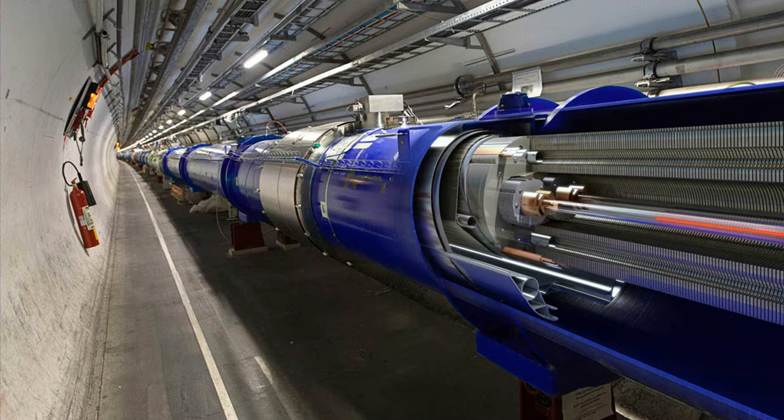How was the Higgs boson discovered? Scientists found it using a giant machine called the Large Hadron Collider. It is a 27 km long underground ring near Geneva, where particles are made to smash into each other at near light speed.